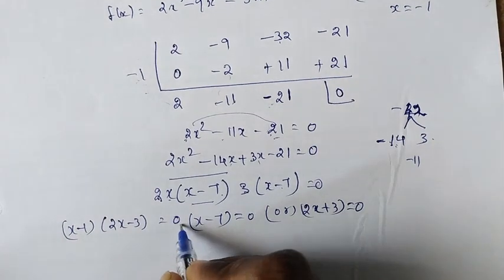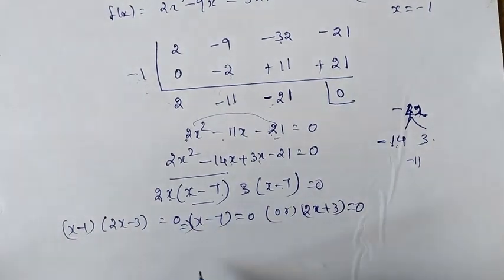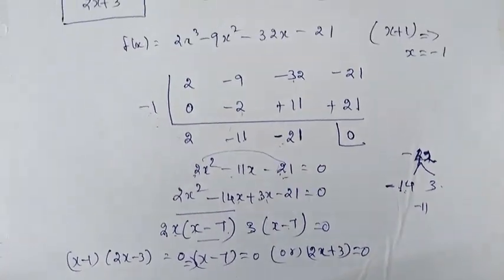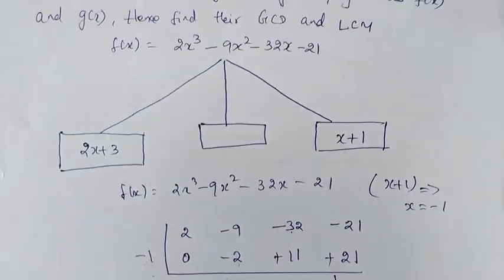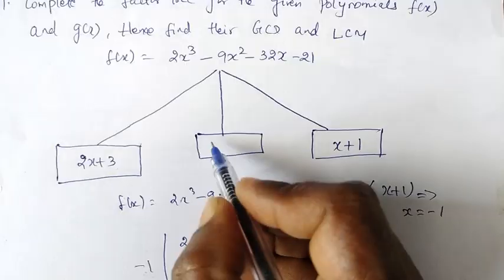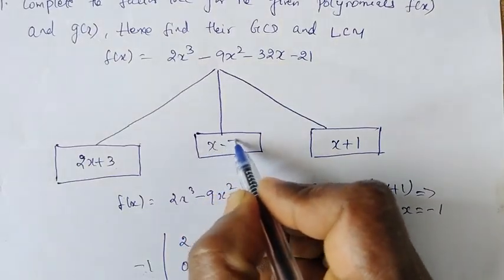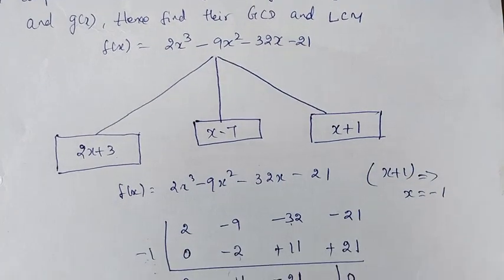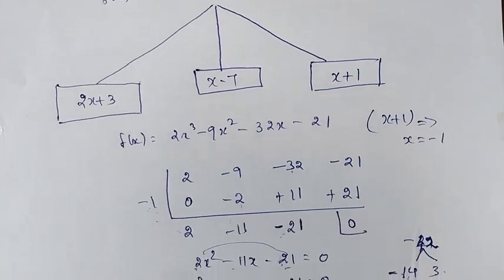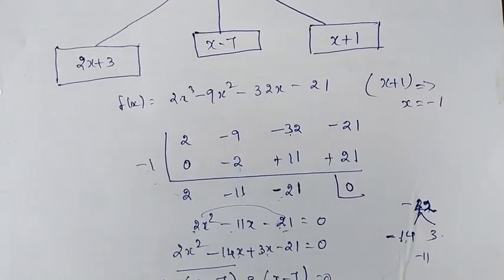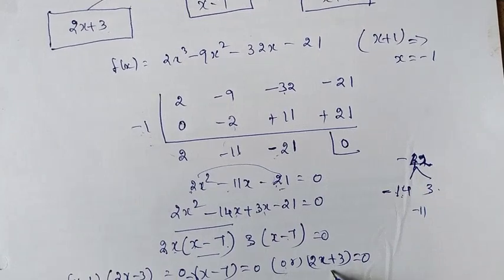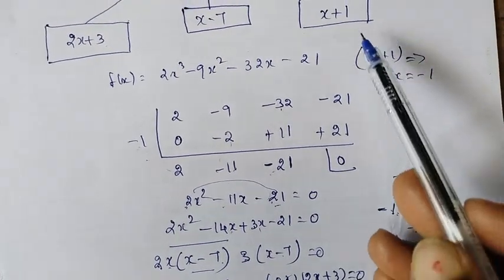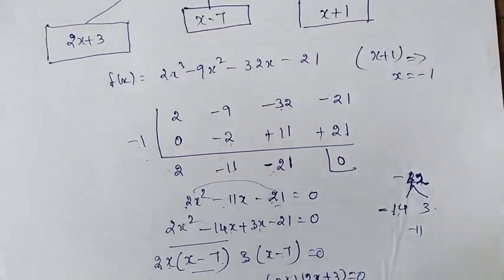Okay, that's simple. Now let's look at the factors. We get x minus 7 and 2x plus 3, and also x plus 1. So the factors of F of x are (x plus 1), (x minus 7), and (2x plus 3).